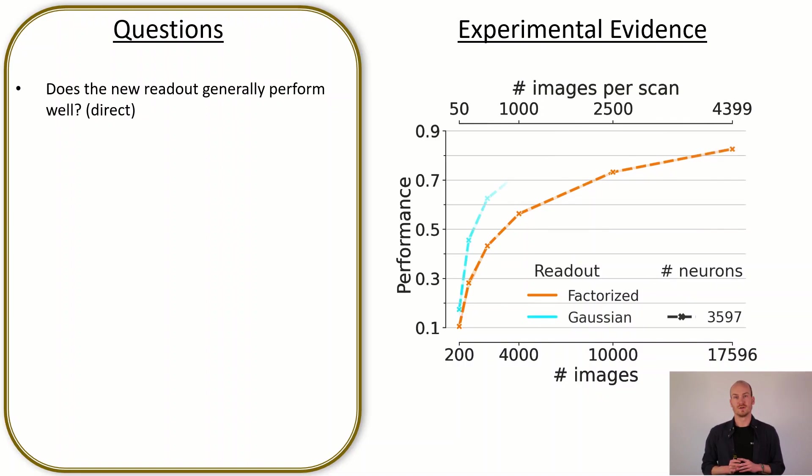If we now look at the Gaussian readout we see that it performs astonishingly well and actually outperforms the factorized readout in all data regimes. This is really good news and if we look at that and check it for the lower number of neurons we see that it is also consistent. We reach a 7% improvement to the state-of-the-art performance.